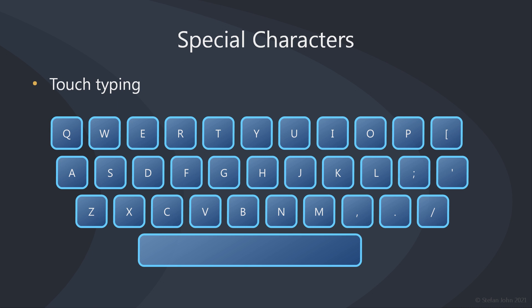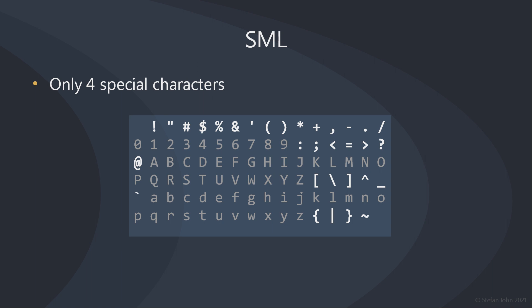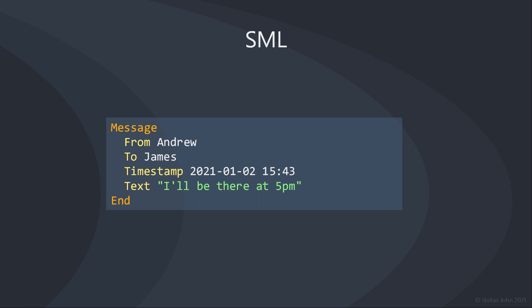If you consider yourself a touch typist and type on a keyboard without looking at the keys, you know that depending on the keyboard layout you are using, it can be hard to type certain special characters. Every character that needs a special key combination or is too far from the default finger position breaks your typing flow and slows you down. So how about a markup language that uses only 4 special characters and is specifically designed to be typed as fast as possible? Well, that's SML — the simple markup language.